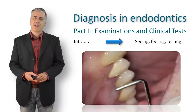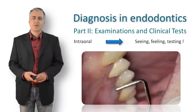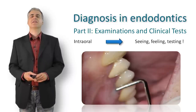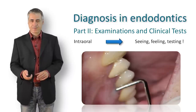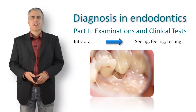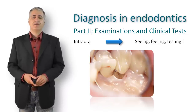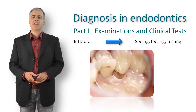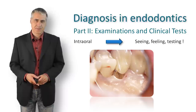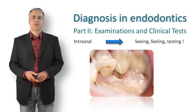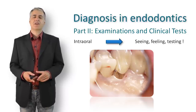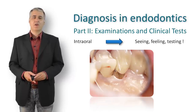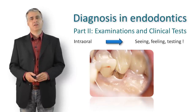A pulp test can clarify this: if the tooth does respond to the pulp test, periodontal disease is most probable. You also have to think of a vertical root fracture, where the pocket often extends quite deeply along the root surface — mostly not easy to detect. A root fracture is always a reason to remove the affected tooth.